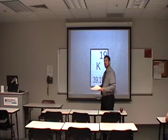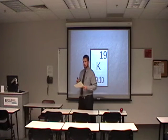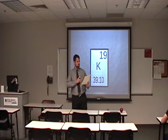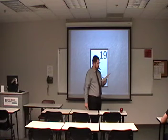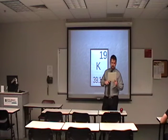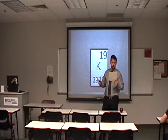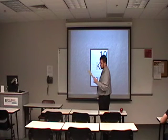Some elements have isotopes, which are variants on an element with a different number of neutrons. For instance, potassium-40: potassium-40 loses one neutron and changes to argon-40. This happens at a predictable rate.